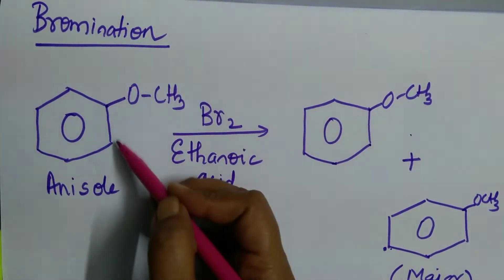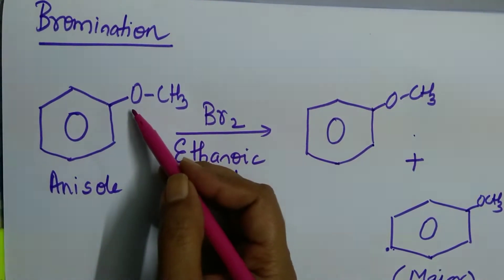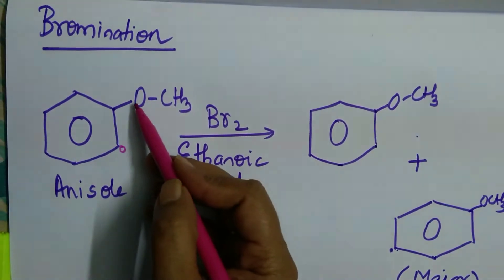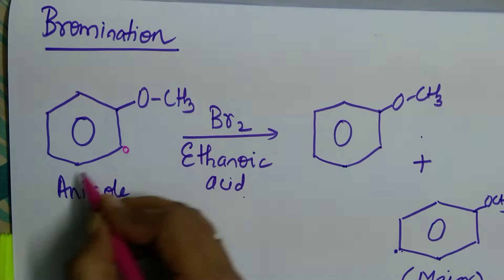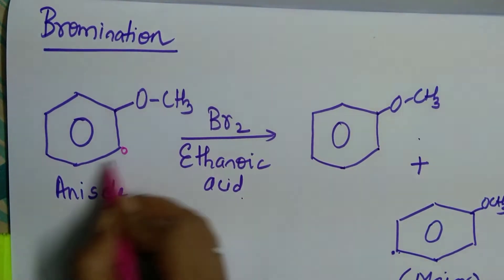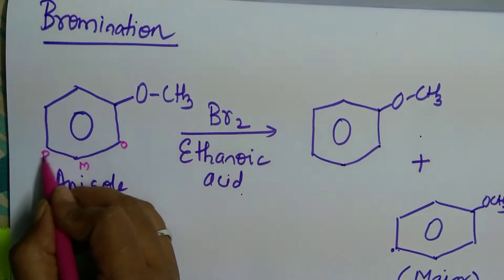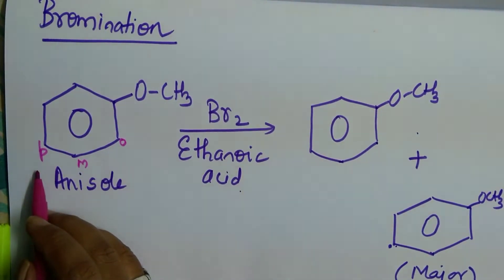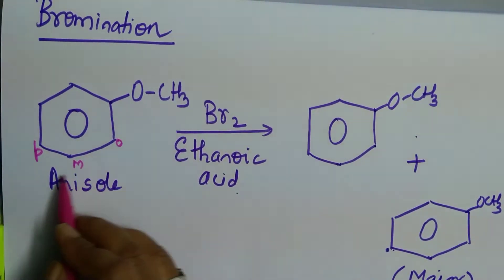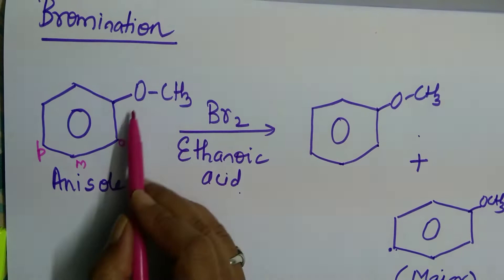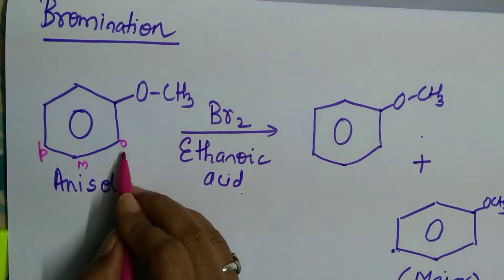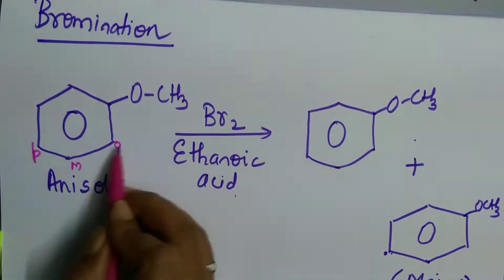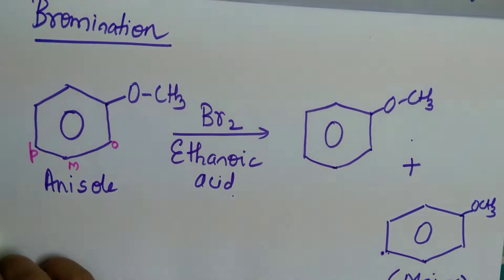The position immediately adjacent to your functional group is called ortho position. The position opposite to it - next to ortho is meta, next to meta is para. Or opposite to your functional group is called para position. How to remember? Remember it as 'oh my god', O-M-P. So what is ortho position? Next to functional group is ortho, opposite to that is para, in between them is meta position.